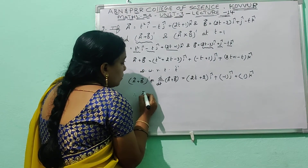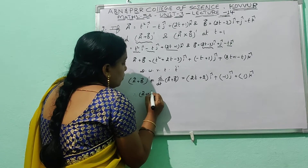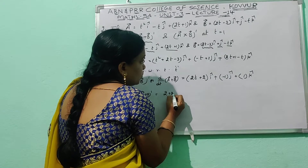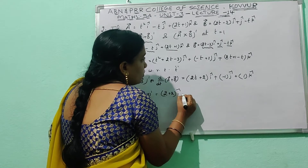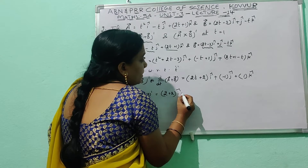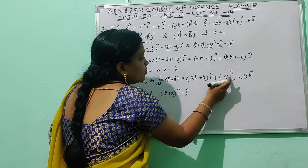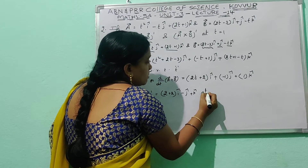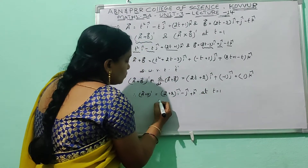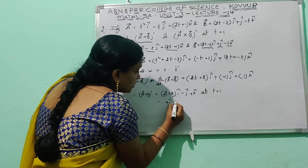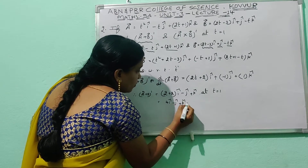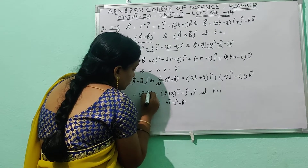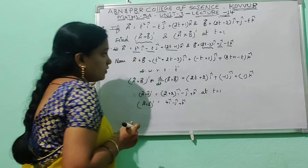So (ā+b̄)' = (2t+2) î − ĵ + k̂. Substituting t = 1: we get 2(1)+2 = 4 for the î coefficient, giving 4î − ĵ + k̂.